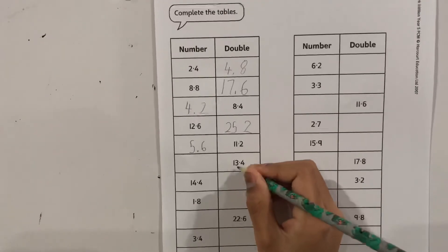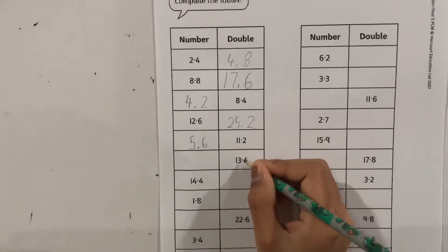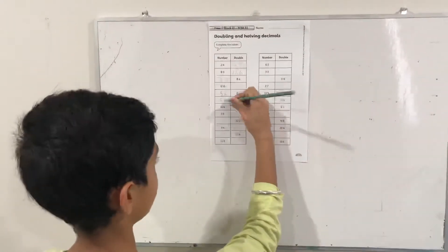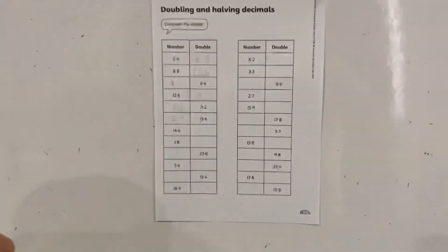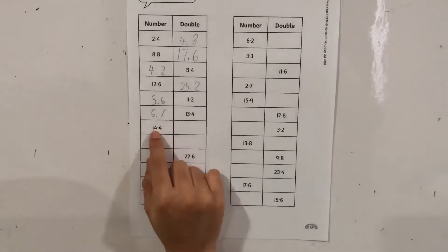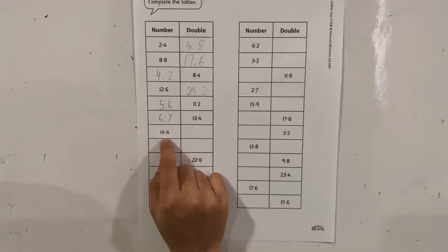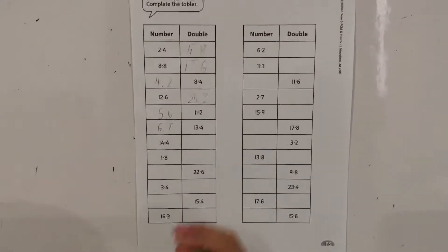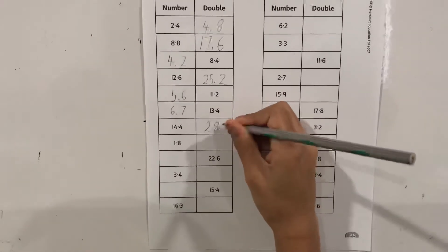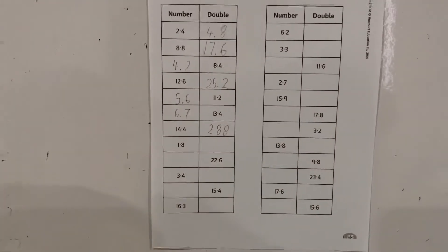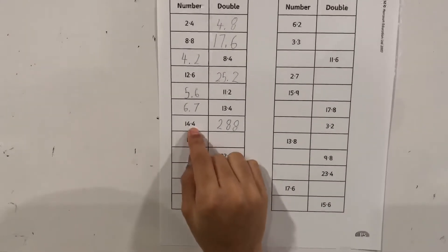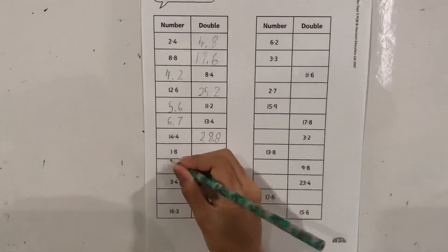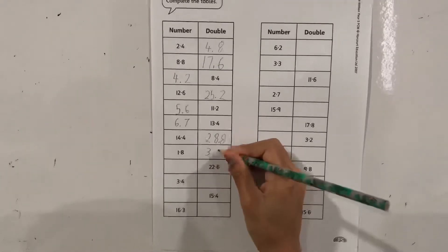Now let's solve this. To solve this we could also remove the decimal point and double 144. Double 144 is 288, and then because there is one number after the decimal point we put a decimal point here to get 28.8. Then 1.8 doubled is 3.6.